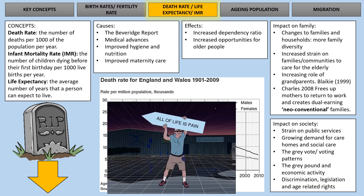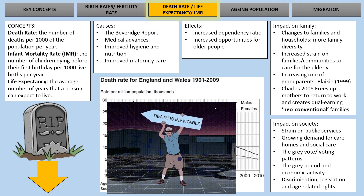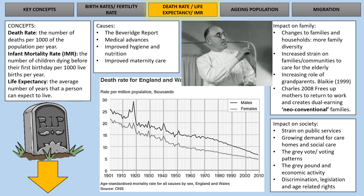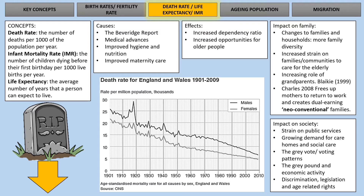The death rate is declining - this is not to say that death isn't going to happen, but the rate at which people die in relation to the population is going down. You can see this table in the centre indicating the general downward trend. The reasons for this include the Beveridge Report and the welfare state - support benefits, pensions, and many other changes. Medical advances have had a big role in extending life and curing illness. We have better hygiene and nutrition, and maternity care has improved - postnatal and prenatal care for babies - and that's what has reduced the infant mortality rate.